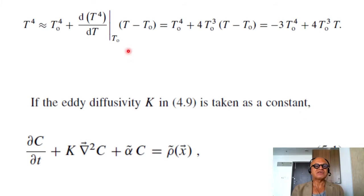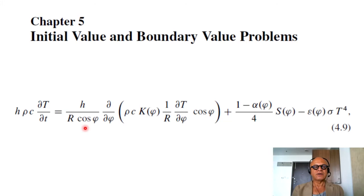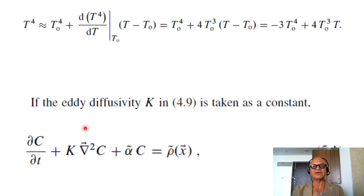So we can write this approximately as t to the 4th as initial value t0 to the 4th plus dt4 dt at t0 times t minus t0. We're just doing a discretization and approximating that equation. You can do your Taylor series expansion and get some approximation here. So you have now got an equation for time evolution of the temperature as a function of initial value of temperature.